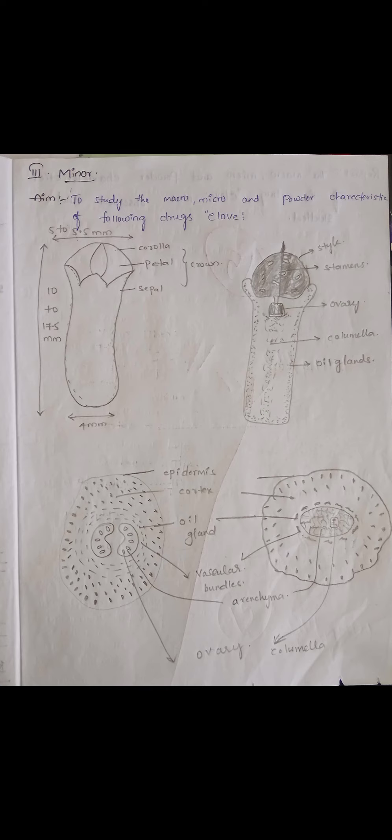Because the question was identify the crude drugs by observing its powder characteristics. So we have to make the powder of the particular drug and disperse it onto the microslide, then observe under microscope by adding phloroglucinol and HCl in 1:1 ratio.